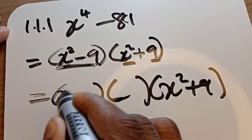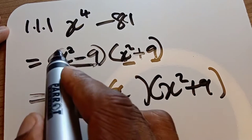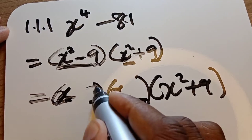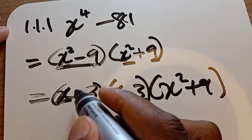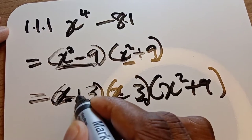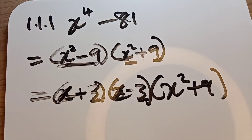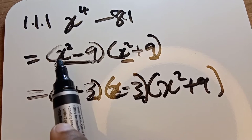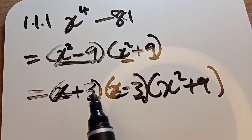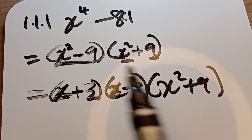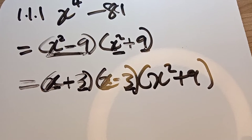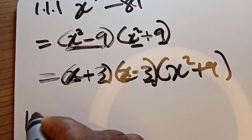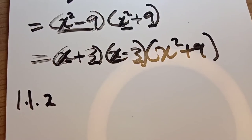Whatever sits in the binomials should be the same. We are going to have x and x — x multiplied by x gives x squared. Whatever sits in the constant positions should also be the same, so we have 3 and 3, with differing signs — positive and negative. x multiplied by x gives x squared, and 3 multiplied by negative 3 gives negative 9. Then we have fully factorized.